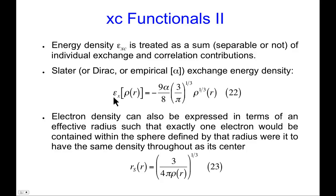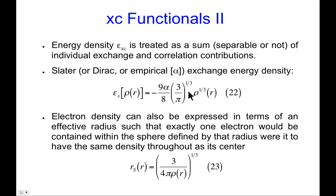For instance, we've looked at the exchange energy expression associated with Slater or Dirac, using rho to the one-third power as the energy density, along with a collection of constants and this alpha value. When it's Slater, alpha equals one; when it's Dirac, alpha equals two-thirds. You could also treat alpha as an empirical tunable parameter. That is what you would plug into the integral — you know what rho is and otherwise it's just constants.